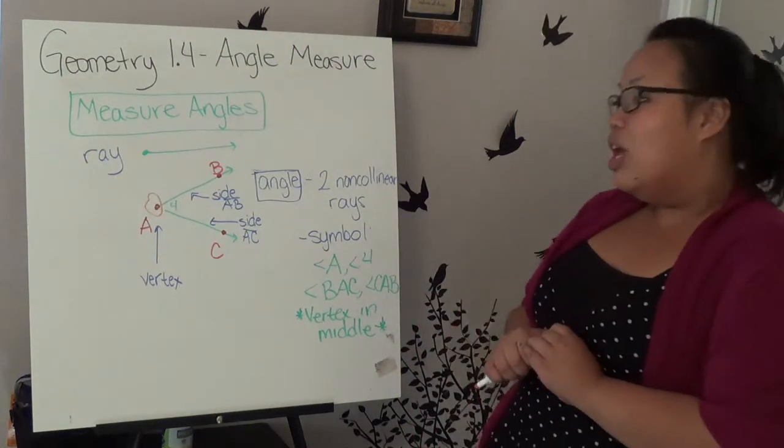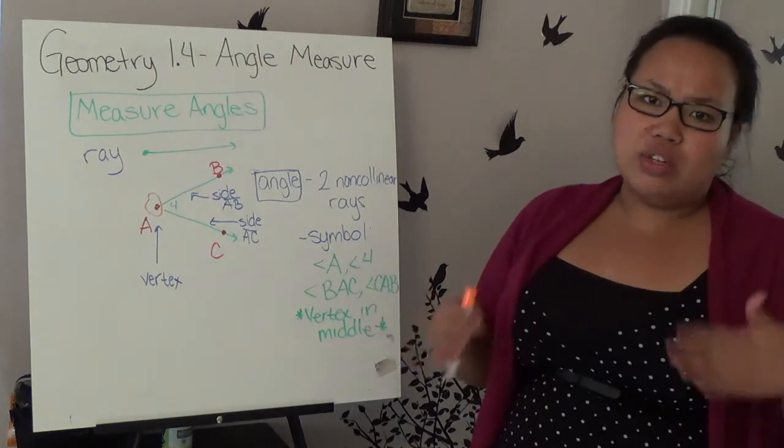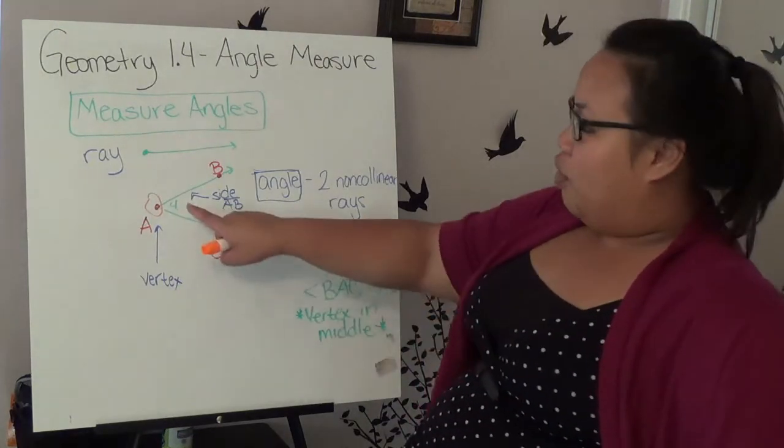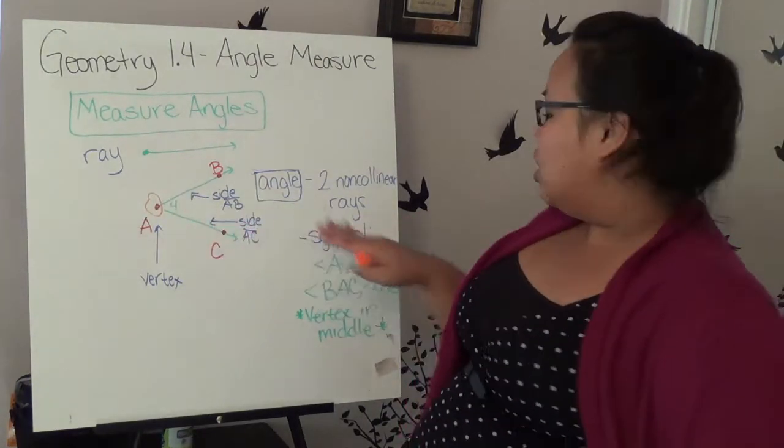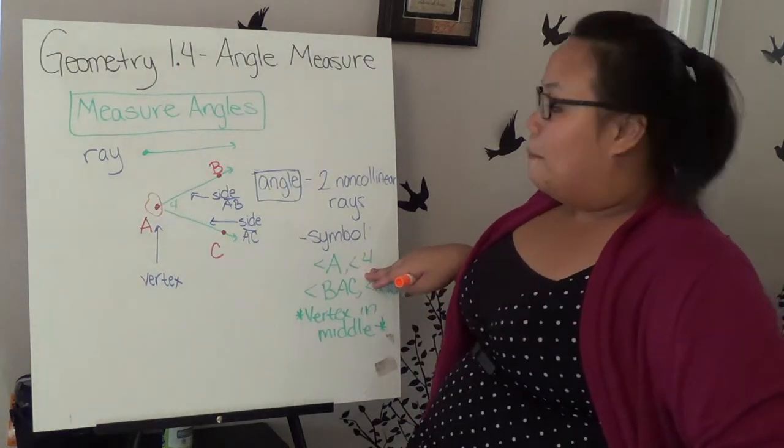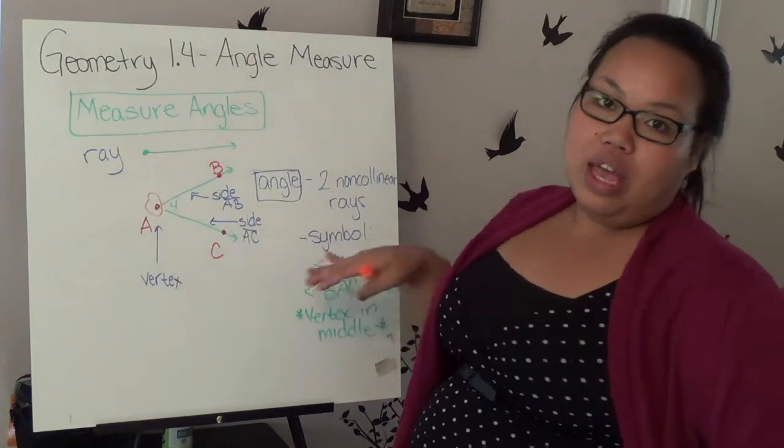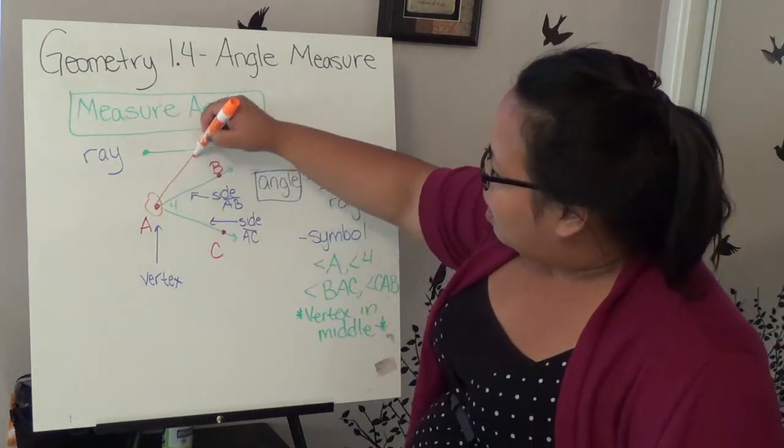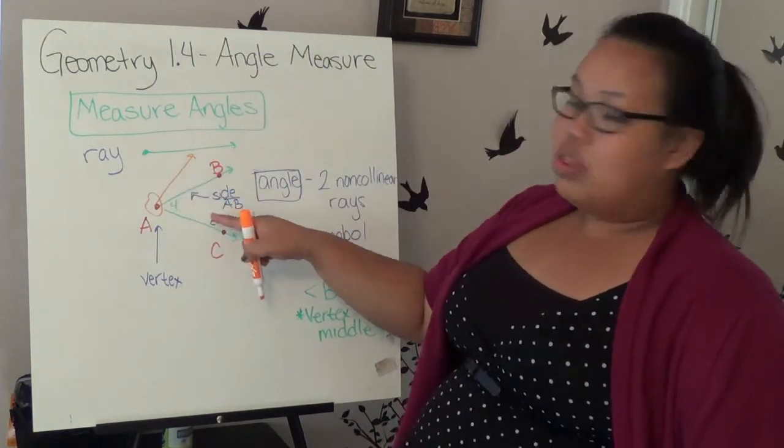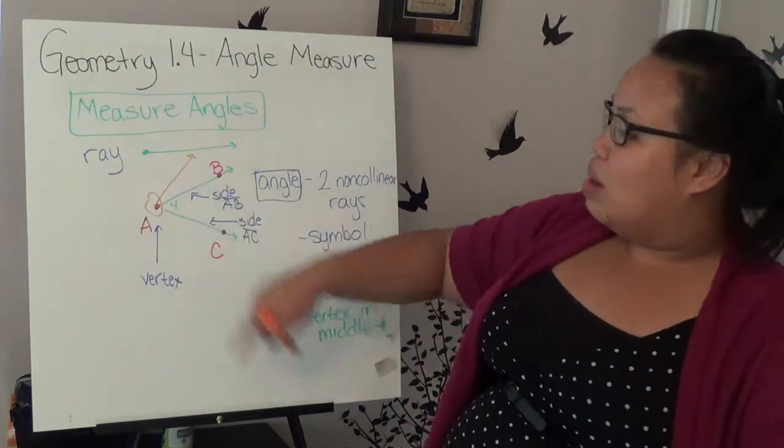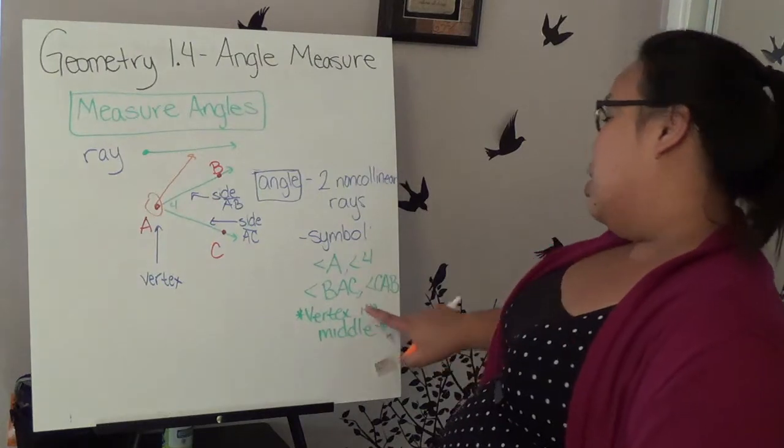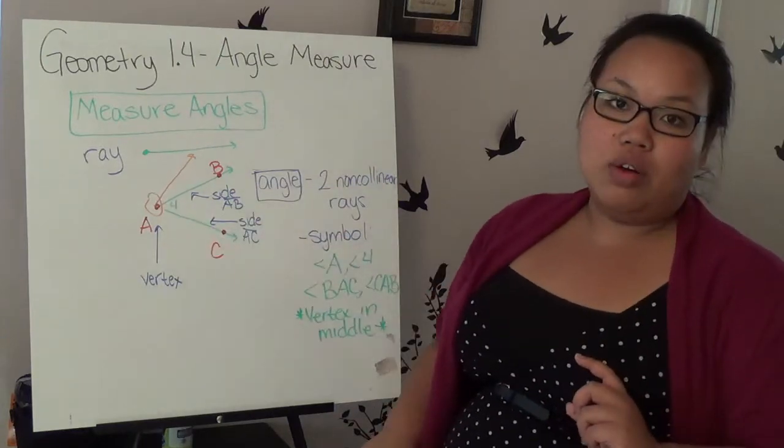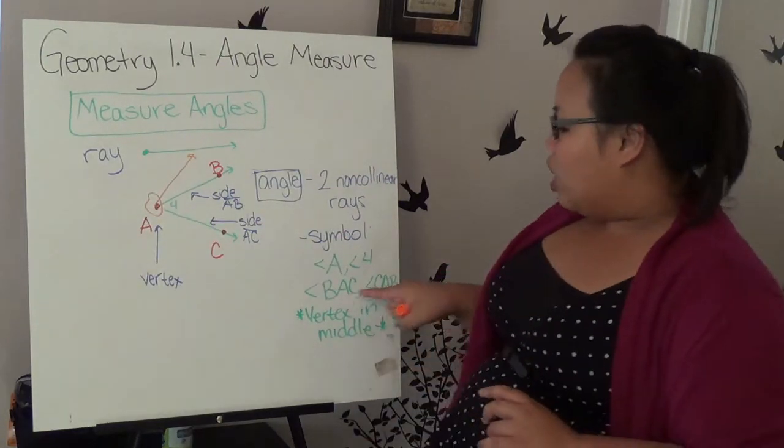The vertex is very important when it comes to naming these. There are three different ways of naming an angle. Sometimes all three ways are not always there. If there's a 4 under the vertex, you can simply say angle 4. But also, you can just name it after its vertex, angle A. But sometimes the vertex shares different angles.